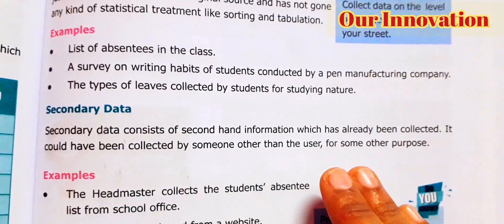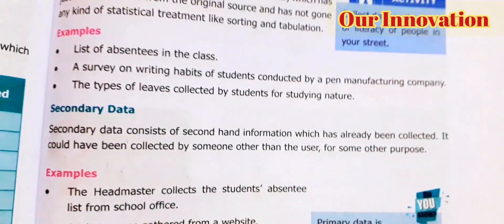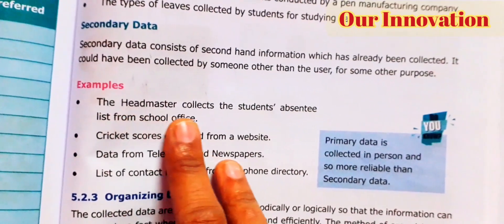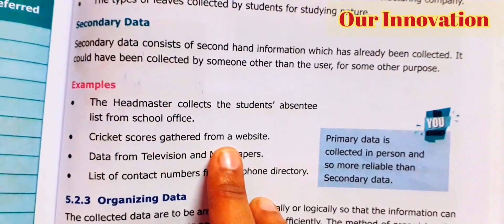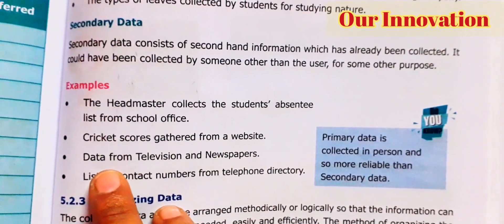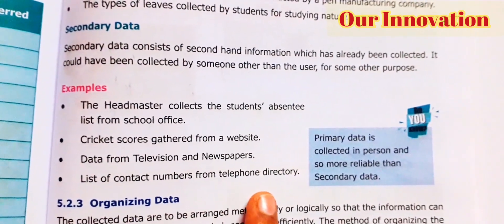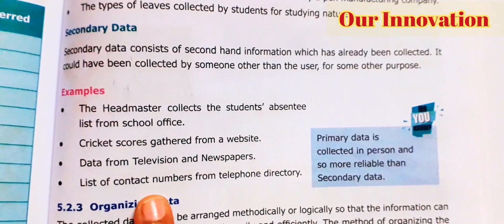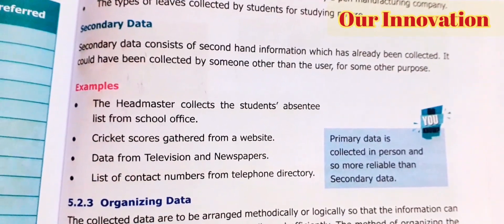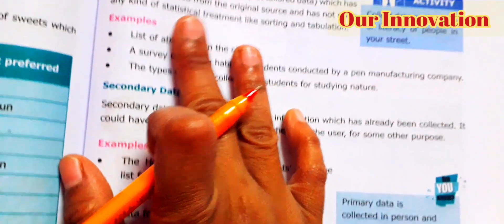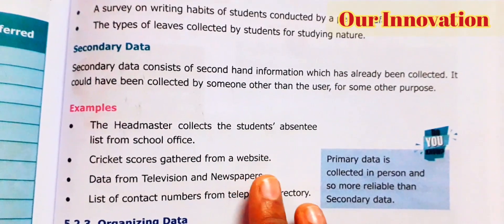Someone else collected the data first for one purpose, and when you collect it again, that becomes secondary data. Examples include: the headmaster collecting the students' absentees list from the school office, cricket scores gathered from a website, data from television and newspapers, and a list of contact numbers from a telephone directory. All of these are secondary data.